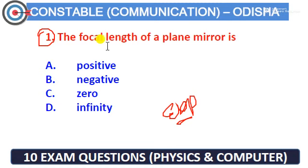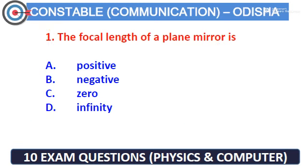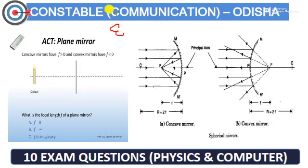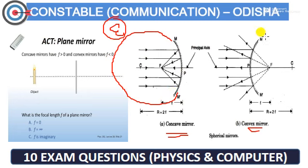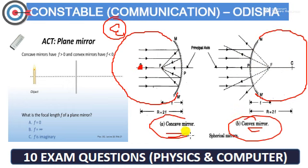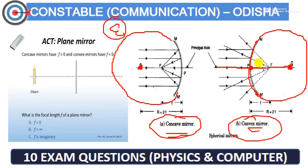The first question: what is the focal length of a plane mirror? The right answer will be infinity. If you have a plane mirror or a spherical mirror — where the sphere is small and the circular part is small — so if you have a convex or a concave, you can see a circle. The center is compulsory. You can see a line D, which is the principal axis.